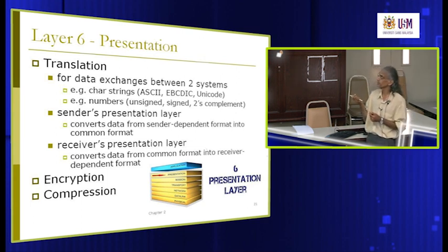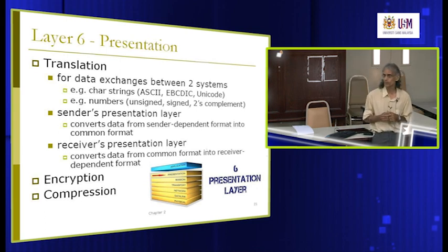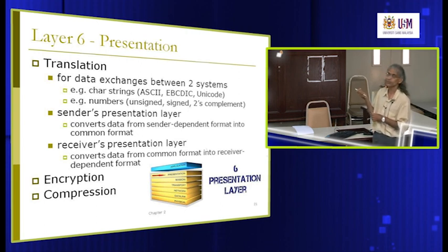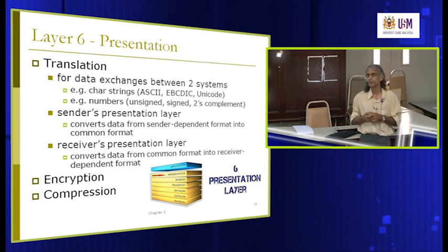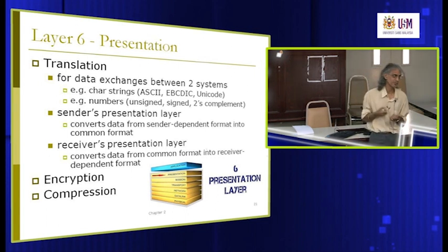Numbers also have different formats — unsigned, signed, two's complement, and so on. There are different ways to represent positive numbers, negative numbers, large numbers, fractions, and scientific numbers. So the presentation layer must translate these accordingly. The sender's presentation layer converts data from the sender's dependent format into a common format, and the receiver converts from the common format into whatever its system requires.